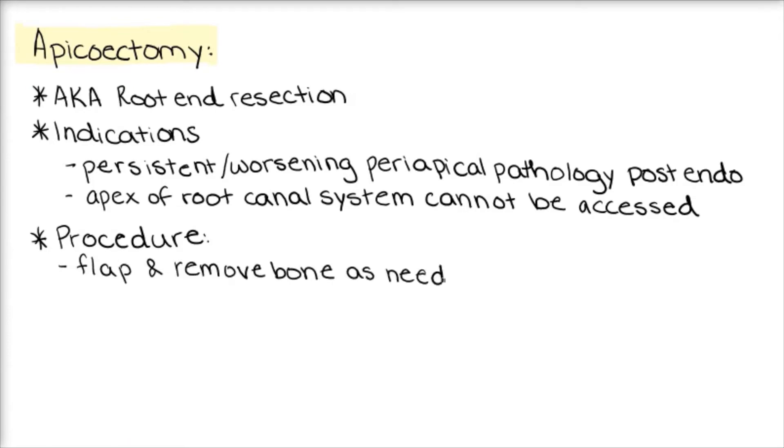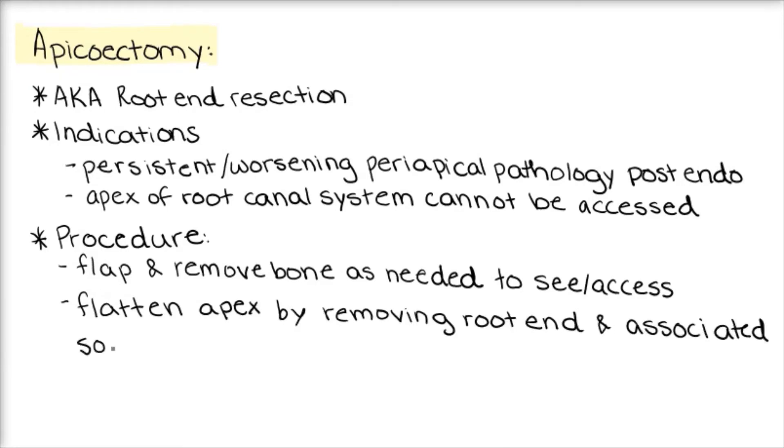This procedure involves elevating a mucoperiosteal flap and removing bone as needed to see and access the apex. Next, we would flatten the apex by removing the root end and associated soft tissues.